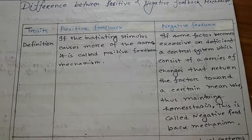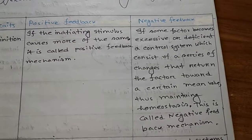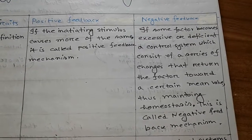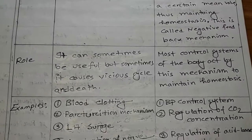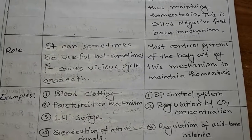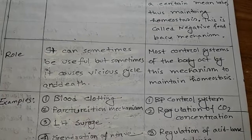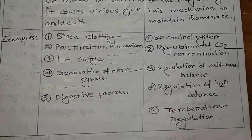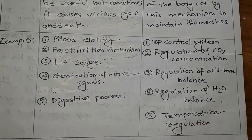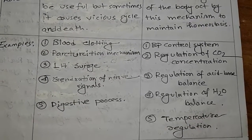Difference between positive and negative feedback mechanism. Definition — positive feedback: if the initiating stimulus causes more of the same, it is called positive feedback mechanism. Negative feedback: if some factor becomes excessive or deficient, a control system returns the factor toward a certain mean value, thus maintaining homeostasis — called negative feedback mechanism. Role: positive feedback can sometimes be useful but sometimes causes a vicious cycle or death. Negative feedback: most control systems of the body act by this mechanism to maintain homeostasis. Examples — positive feedback: blood clotting, parturition, generation of nerve signals, digestion. Negative feedback: BP control, regulation of carbon dioxide, acid-base balance, water balance.